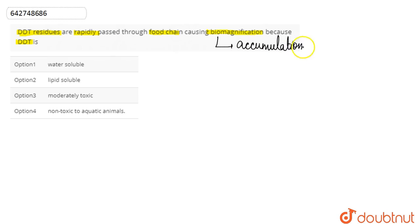It is the accumulation of toxic elements at every successive trophic level. This is basically known as biomagnification.